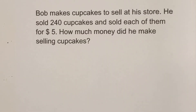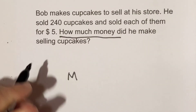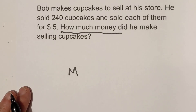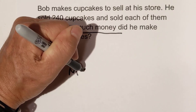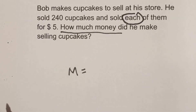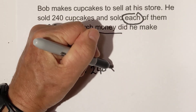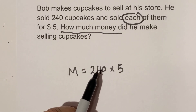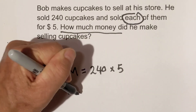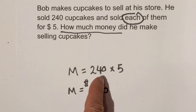Bob makes cupcakes to sell at his store. He sold 240 cupcakes and sold each for $5. How much money did he make selling cupcakes? The variable is how much money he made — let's use M for money. We want the grand total, and he sold each cupcake for $5, so each signals multiplication. M equals 240 times 5, which equals $1,200. So he made $1,200 selling 240 cupcakes at $5 each.